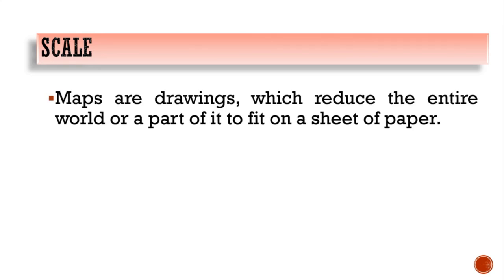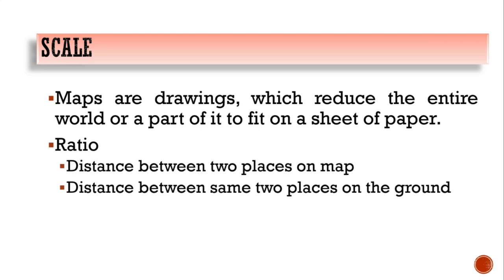The second most important element of a map is scale. Maps are drawings which reduce the entire world or a part of it to fit on a sheet of paper — maps are drawn to reduced scales. This reduction is done very carefully so that the distance between places is realistic. A scale can be defined as the ratio of the distance between two places on the map and the distance between those same two places on the ground.